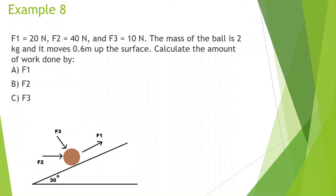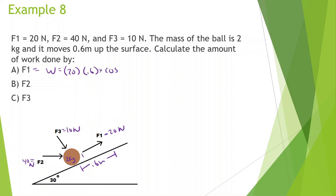F1 equals 20 newtons, F2 equals 40 newtons, F3 equals 10 newtons. The mass of the ball is 2 kilograms and it moves 0.6 meters up the surface. For F1: work equals 20 times 0.6 times cosine of 0, since the force and displacement are in the same direction — that equals 12 joules.